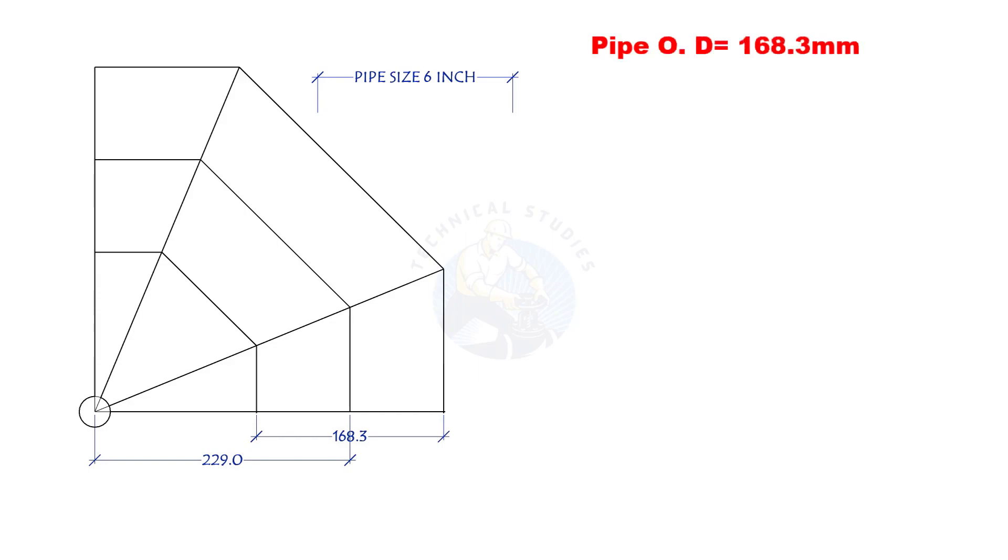This is a 6-inch pipe. The OD of the pipe is 168.3 mm. The center radius of the mitre is 229 mm, but this formula is applicable for any radius.